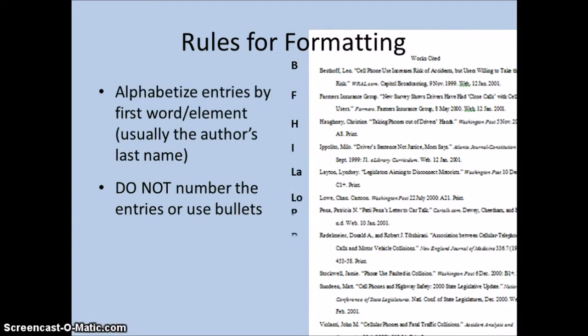You'll notice that the entries are alphabetized by the first element, usually the last name of the author. If there is no author, the first element is then usually the article title. Make sure you collect full publication information for all the works you use or cite in your paper. That way, writing the Works Cited page will be easier for you.